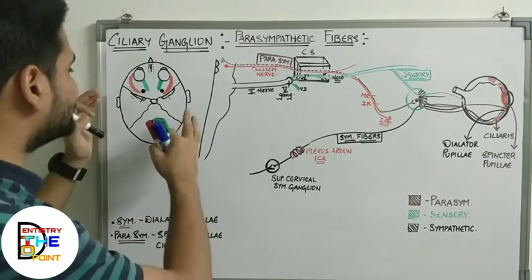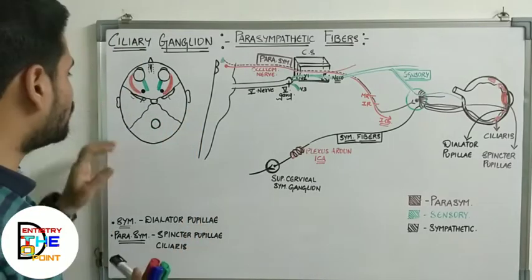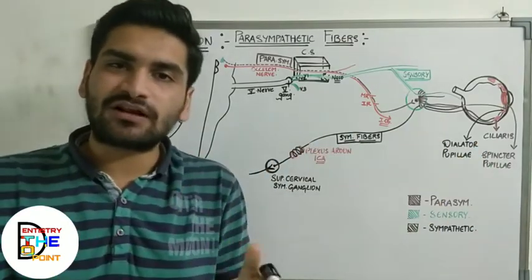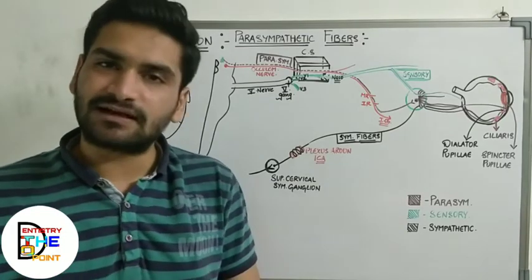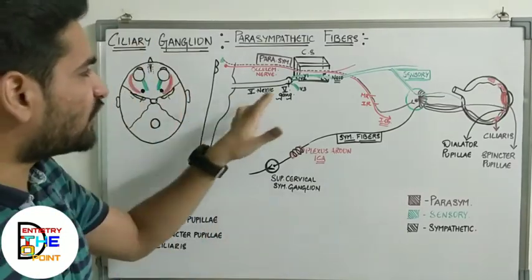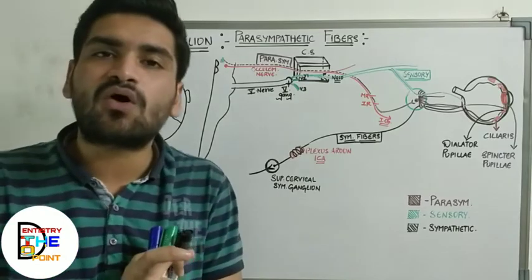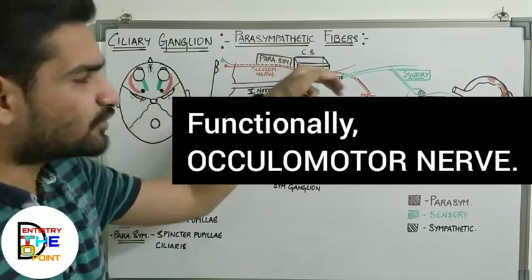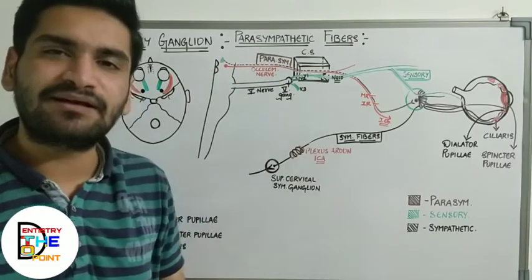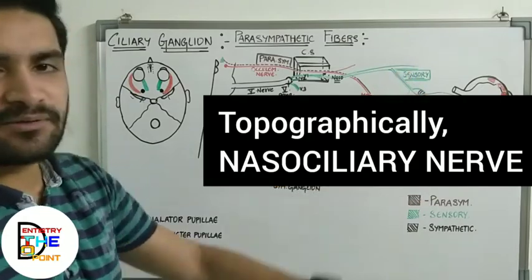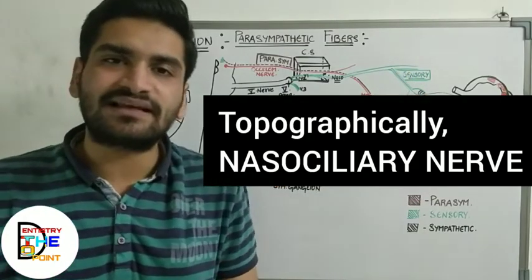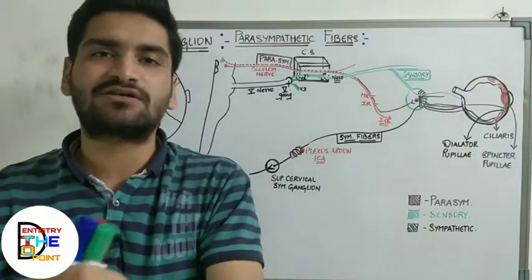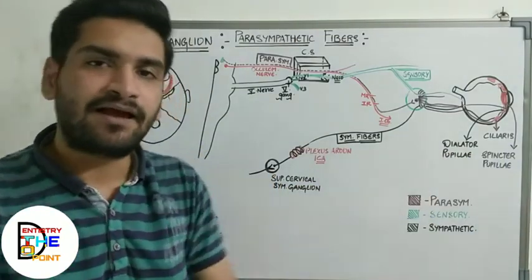Regarding its relations: functionally, the ciliary ganglion is related to the oculomotor nerve, as the parasympathetic fibers run along the oculomotor nerve. Topographically or anatomically, it is related to the nasociliary nerve. So functionally it's related to the oculomotor nerve, and positionally or anatomically it's related to the nasociliary nerve.